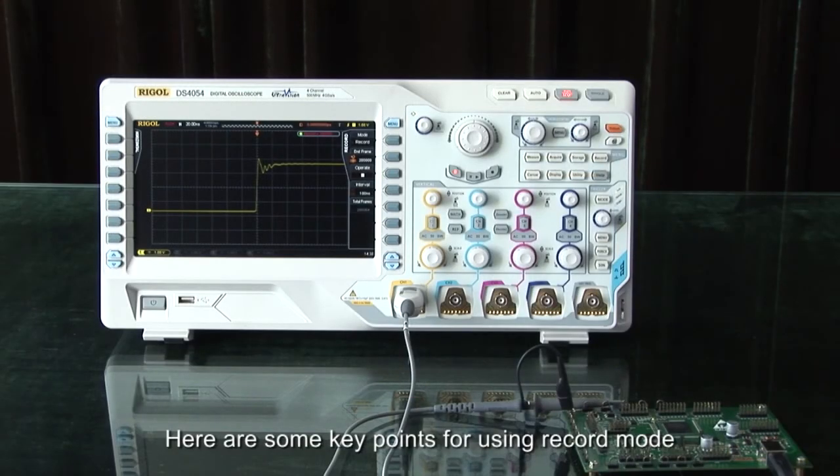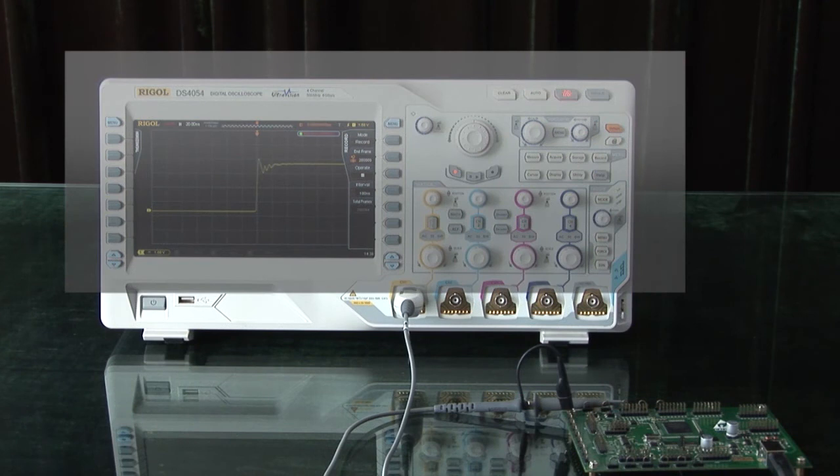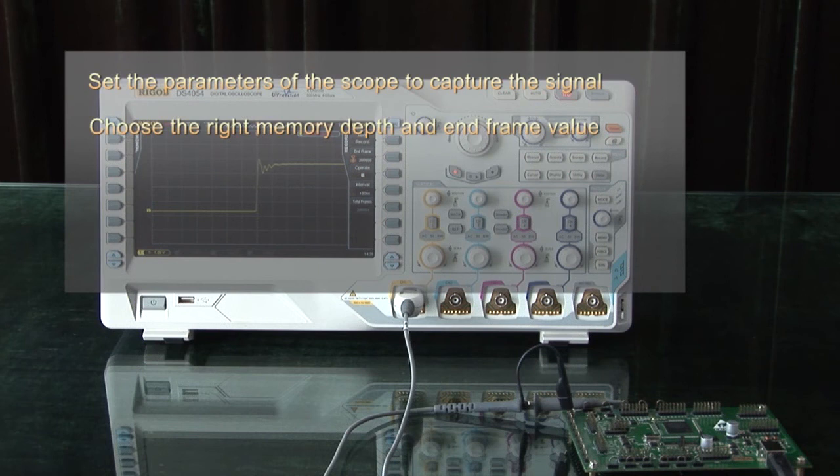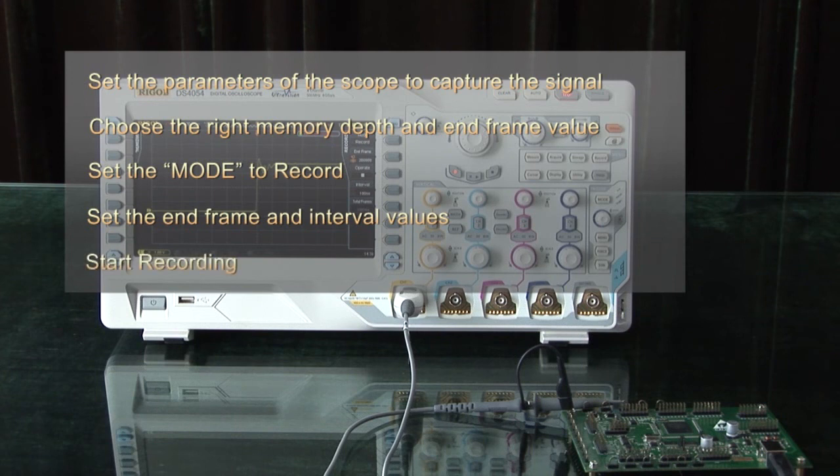Here are some key points for using record mode. Set the parameters of the scope to capture the signal. Choose the right memory depth and end frame value. Set the mode to record, set the end frame and interval, and then start recording.